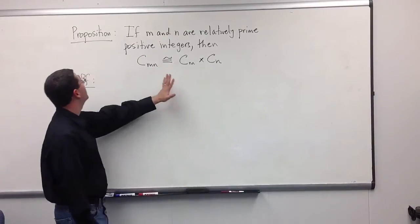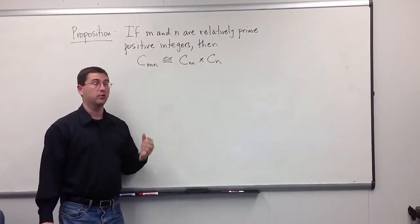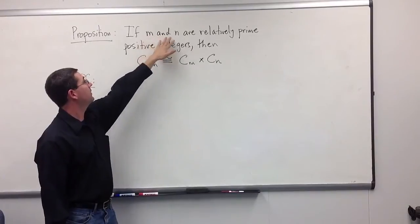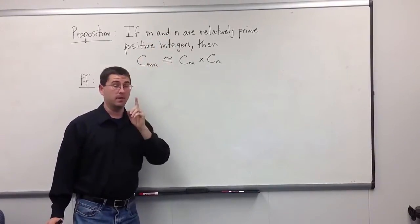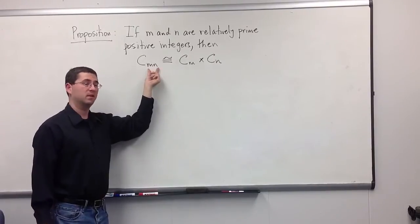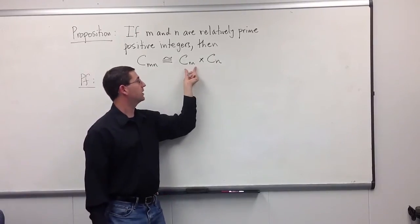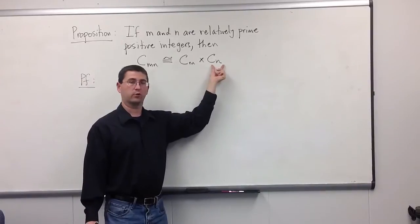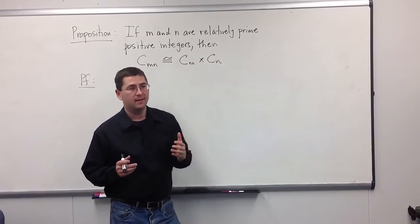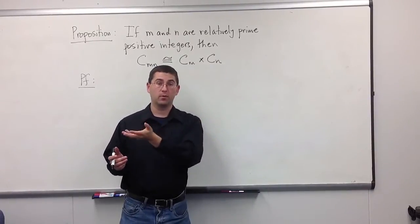This video is just going to be about a very simple but very useful proposition, which says: if we start with two positive integers m and n which are relatively prime — and that's key — and we look at the cyclic group of order m times n, then that should be isomorphic to the cyclic group of order m cross the cyclic group of order n. So, for example, let's say you had 2 times 3 and you looked at a cyclic group of order 6.